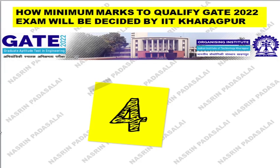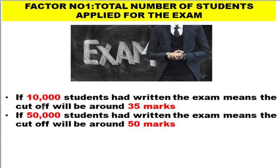I have made a PPT for this video. You should know how the minimum mark is decided by IIT. There are four factors involved. First, the total number of students who applied — say if 10,000 students wrote the exam, the cutoff might be 35 marks, but if 50,000 students wrote, the cutoff could be around 50 marks. Lesser the number of students, lesser the cutoff. For GATE biotechnology, competition is very low since only 10,000 to 13,000 students apply.